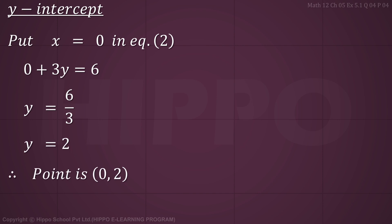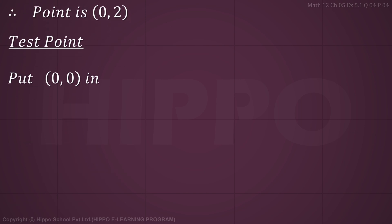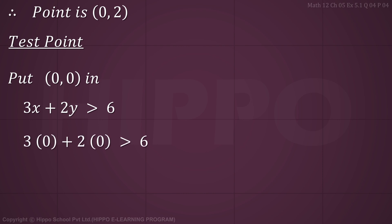Now we find the test point. Put (0, 0) in 3x + 2y ≥ 6: 3(0) + 2(0) = 0 ≥ 6, which gives 0 ≥ 6, which is false.